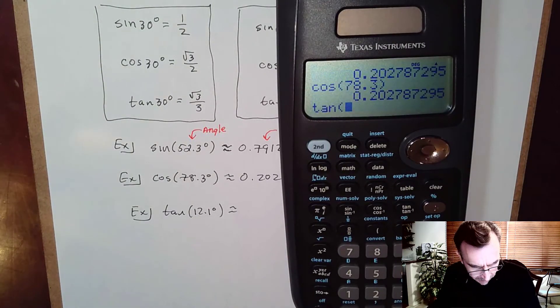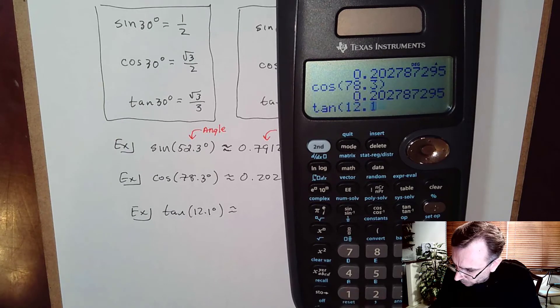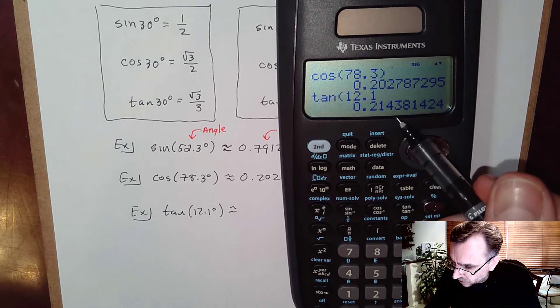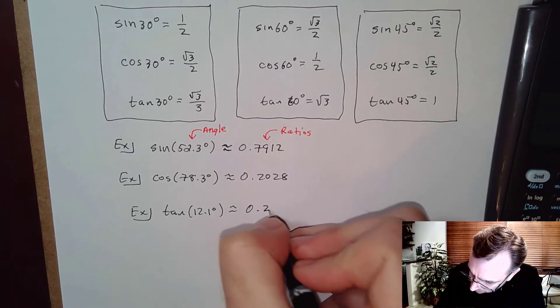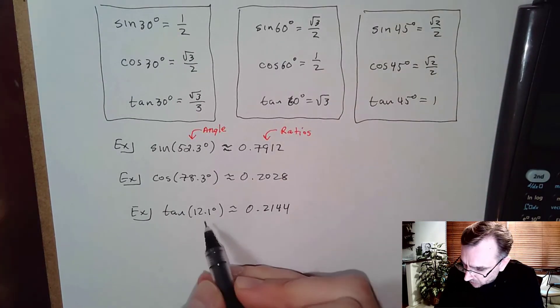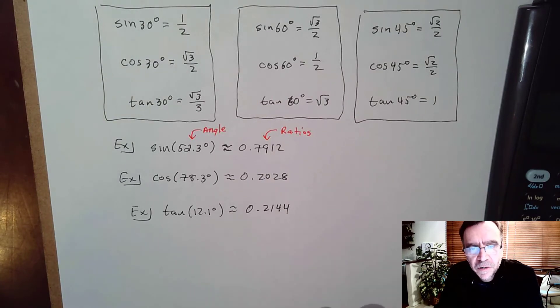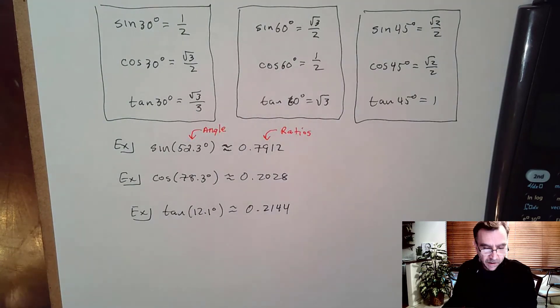Finally, let's do tangent. Tangent of 12.1° - I'm getting 0.2144 after I round off properly.